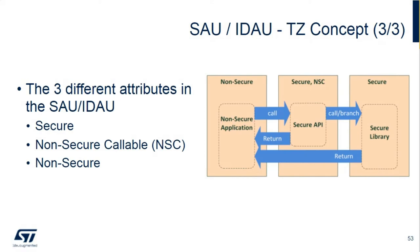This is what the software flow looks like between the non-secure and the secure worlds. When the non-secure world wants to call the secure world, it has to go through the non-secure callable region, which contains all the entry points into the secure world. If the non-secure tries to jump directly to the secure world, a security fault is generated. When the secure world returns to the non-secure world, it is direct — it doesn't have to go through the non-secure callable. So the non-secure callable contains all the entry points of the secure world, and when the CPU is in a non-secure state, there is no way for it to jump directly into the secure world.